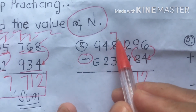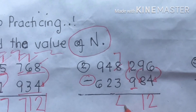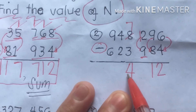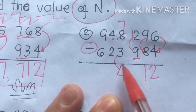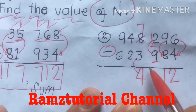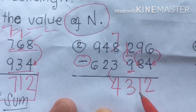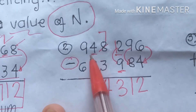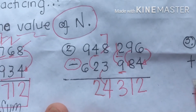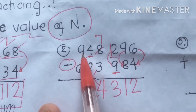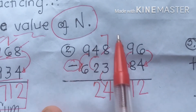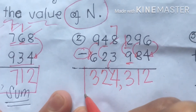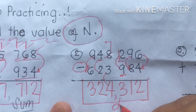Seven minus three, we write four. Remember, you can check your answer by adding the difference back to the subtrahend. Back to twelve minus nine, we have three. Then four minus two equals two. Next, nine minus six — since nine is greater than six, we write three. Our final answer is 224,312. This is what we call the difference.